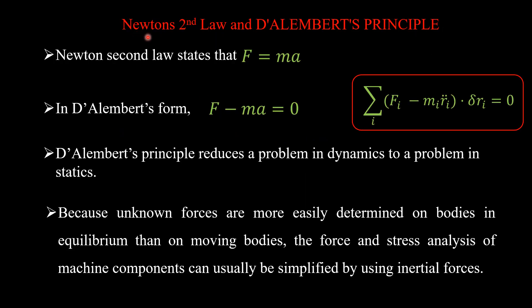Now we will compare Newton's second law and D'Alembert principle. According to Newton's second law F equal to M·A. Same thing in the D'Alembert form: F minus M·A equal to zero. Mathematically both look like the same.